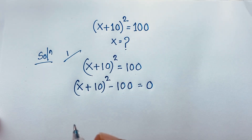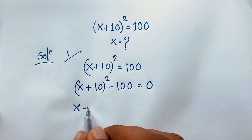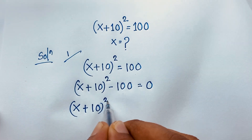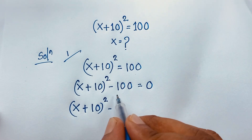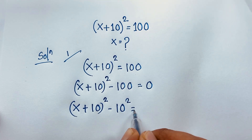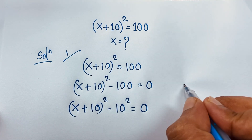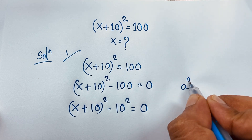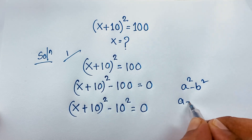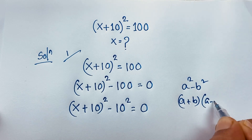Now you can see that (x + 10)² − 100, it will be (x + 10)² − 10² = 0. Now we know that a² − b² = (a + b)(a − b).